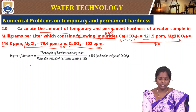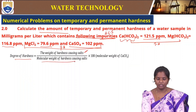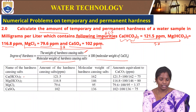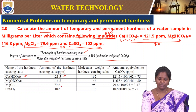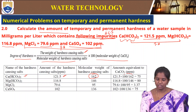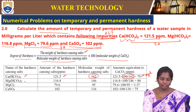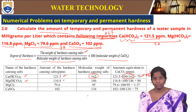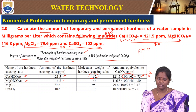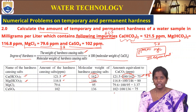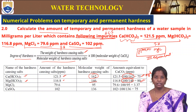Using the formula, temporary degree of hardness = weight of hardness-causing salt ÷ molecular weight × 100. For calcium bicarbonate: 121.5 × (100/162) = 75 mg/L. For magnesium bicarbonate: 116.8 × (100/146) = 80 mg/L. These two bicarbonates give rise to temporary hardness.